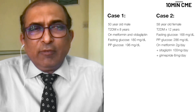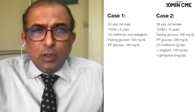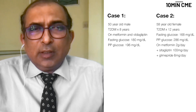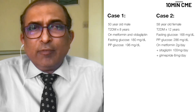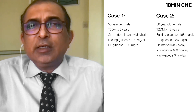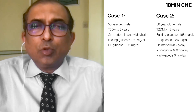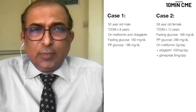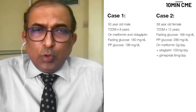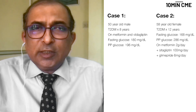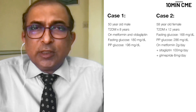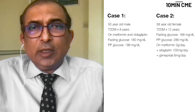In contrast, we have a 58-year-old lady who has had diabetes for 12 years, with a fasting glucose of 168 and a post-prandial glucose of 286. She is currently on metformin 2 grams per day, glimepiride 6 milligrams per day, and sitagliptin 100 milligrams per day.